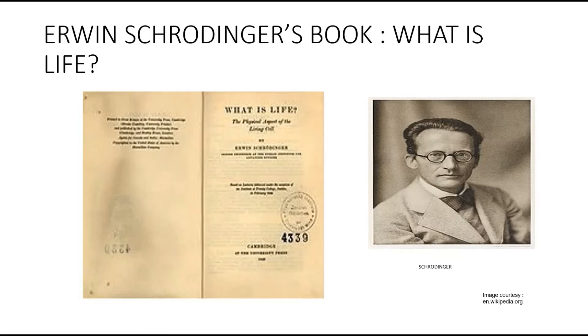The book focused on how the events in space and time which take place within the spatial boundary of a living organism can be accounted for by physics and chemistry. In the book, Schrödinger introduced the idea of an aperiodic crystal that contained genetic information in its configuration of covalent chemical bonds. In the 1950s, the idea stimulated enthusiasm for discovering the genetic molecule DNA.